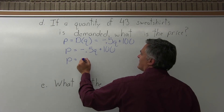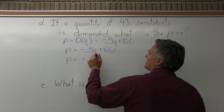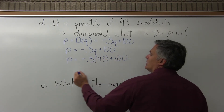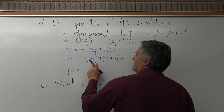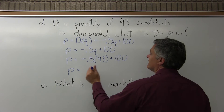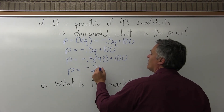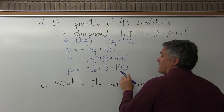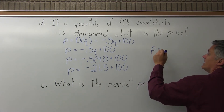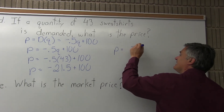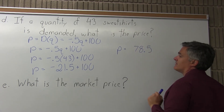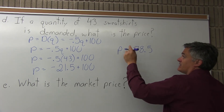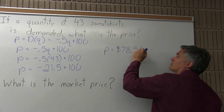So P equals negative .5 times Q, which becomes negative .5 times 43, plus 100. Negative .5 times 43 equals negative 21.5, and we add 100. P equals negative 21.5 plus 100, which gives P equals 78.5. That 78.5 is P for price, so it's really $78.50.